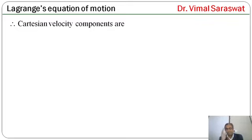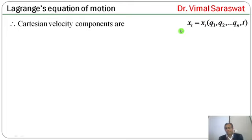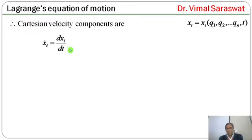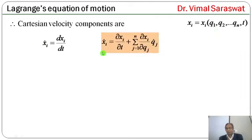Now, to find the Cartesian velocity, we take the rate of change of Cartesian coordinates with respect to time. Since xi is a function of q and t, if we take the time derivative, we get the Cartesian velocity components: xi_dot = ∂xi/∂t + Σ(j=1 to n) (∂xi/∂qj) * qj_dot.